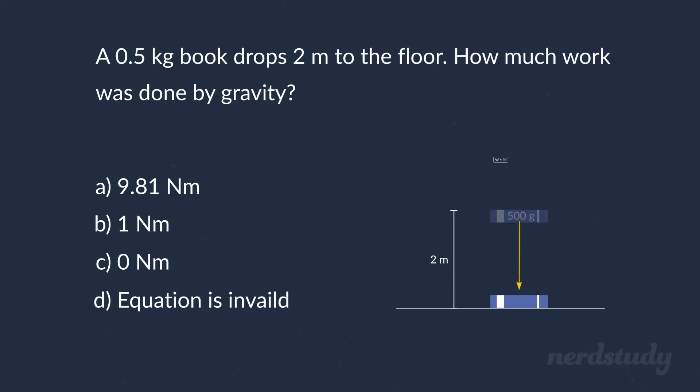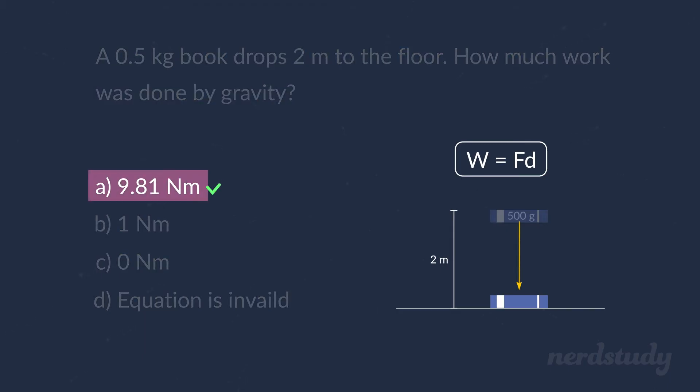Suppose we take a book that's half a kilogram in mass, hold it two meters above the floor, then drop it. We know that gravity did perform some work on the book, but how much work? Using our new formula, what would the answer be? Well, the answer is 9.81 newton meters. And how did we figure that out?